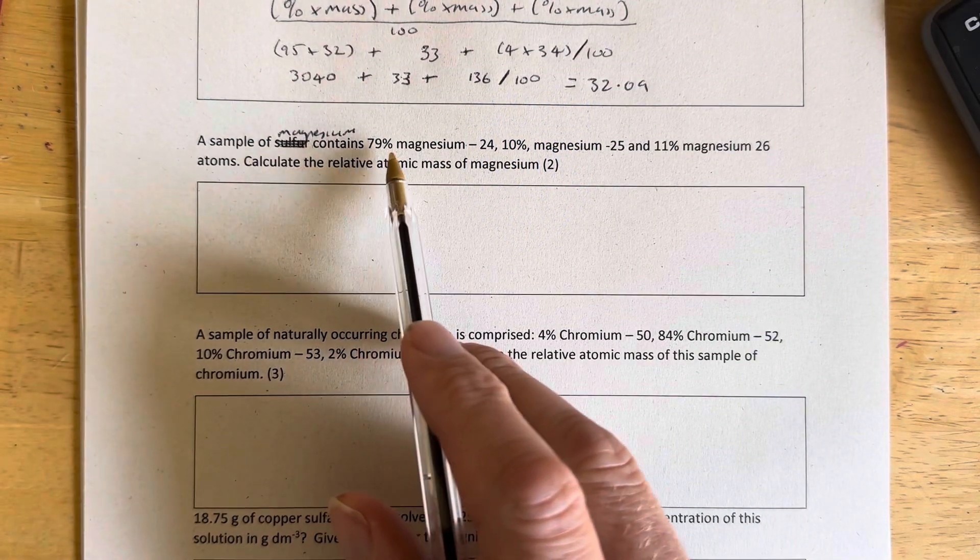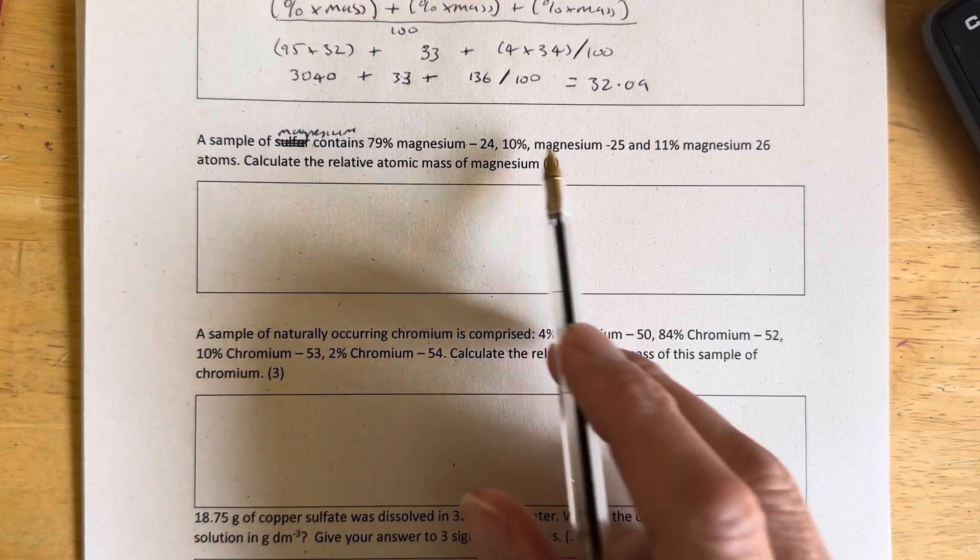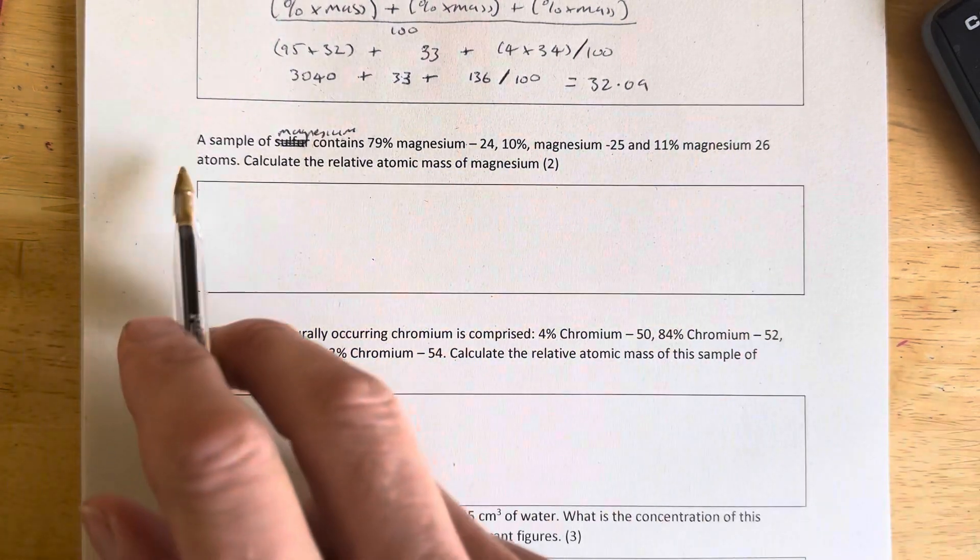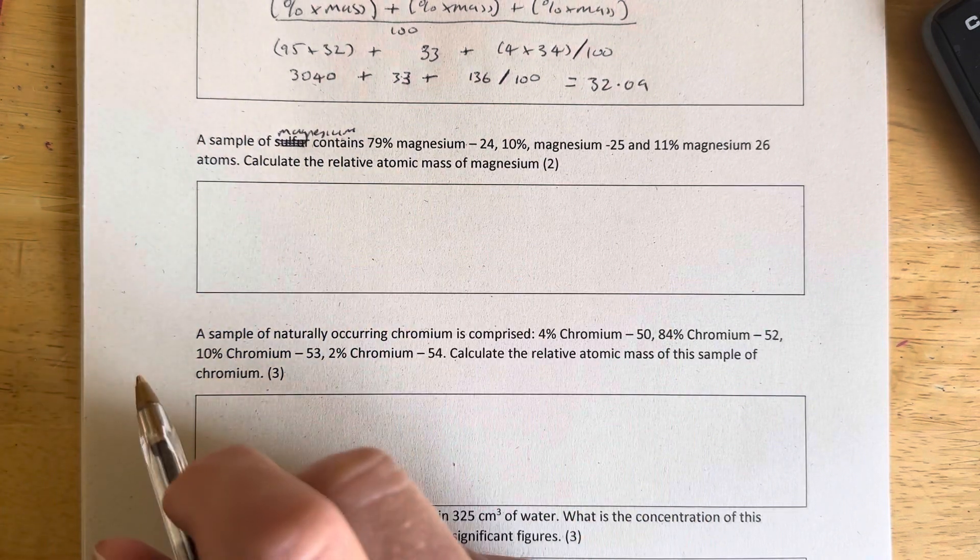A sample of magnesium contains 79% magnesium-24, 10% magnesium-25, and 11% magnesium-26. Calculate the relative atomic mass of magnesium.